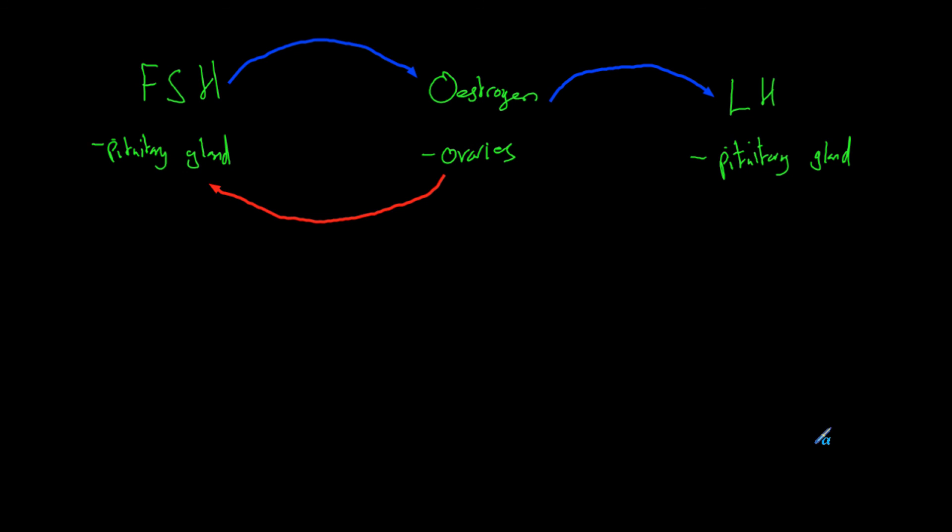And once this happens, the oestrogen and LH levels in the blood have gone down and that allows FSH to go back up and the cycle will start again. Because if oestrogen is causing FSH to not be produced, if we take away the oestrogen, then FSH can be produced. Then we'll produce FSH again and the cycle will repeat itself.